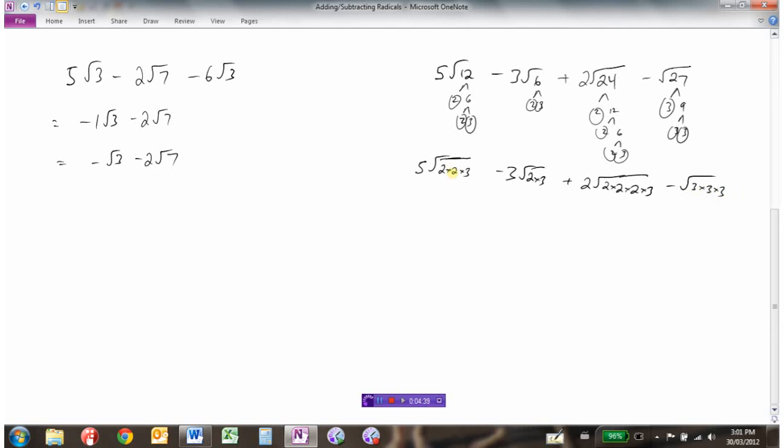So these are all square roots, so we're looking for pairs to be brought out. So we're going to bring a 2 out here - that's 10√3. No pairs here so that's still √6. Here we can bring a 2 out, multiply by the 2 in front makes that a 4√(2 × 3) left behind, so that's a 6. And we have a pair of 3s we can bring out here and there will be a 3 left behind.